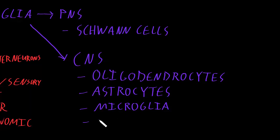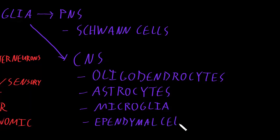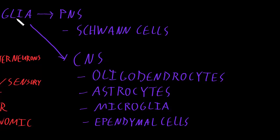Then there are cells called ependymal cells. Ependymal cells line fluid-filled cavities inside the tissues of the central nervous system, and they also play a role in fluid secretion. In addition to those functions, glial cells also perform many other functions.